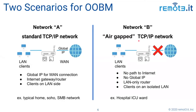On the right, what I've called Network B, is a situation known as an air-gapped network where there is no internet connection whatsoever. All we have are devices — maybe PCs, printers, phones — various LAN clients. They do connect to a router or switch so they can communicate with each other over the LAN, but there's no path to the internet.